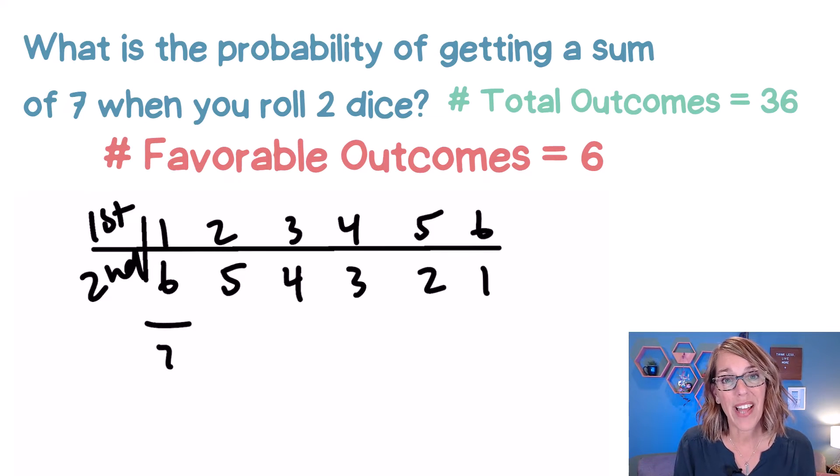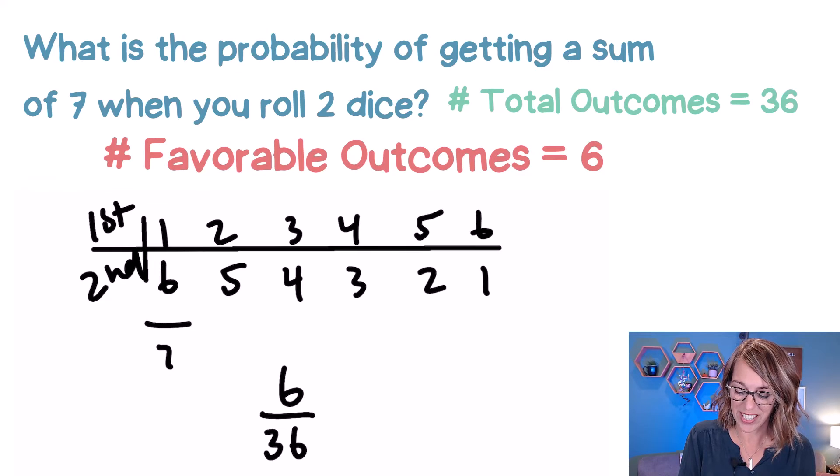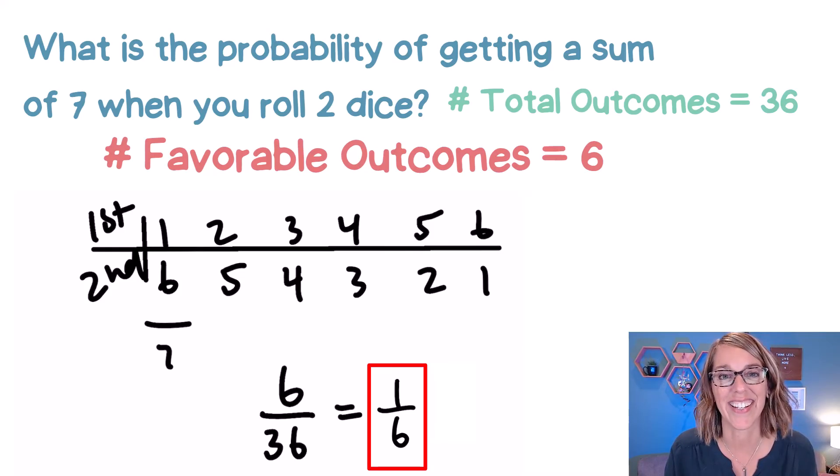With those six possible outcomes, I get my answer: favorable over total, which is six out of 36, which reduces to our answer of one sixth.